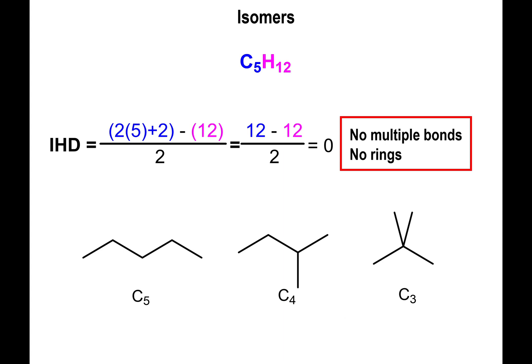Hopefully this helps. In the next few videos I'll show more examples to get the idea rolling of how to use the IHD value to generate proper structures. Note that I didn't even need to count hydrogens explicitly — following the rule of no multiple bonds and no rings guarantees the correct hydrogen count. As a check for the four-carbon parent chain isomer: 3 + 2 + 1 + 3 + 3 = 12 hydrogens — exactly right. See you in the next video!